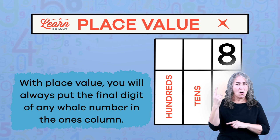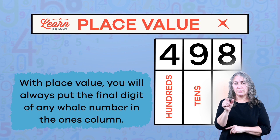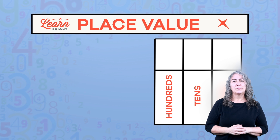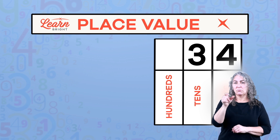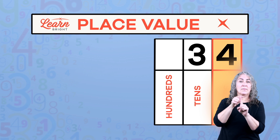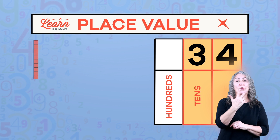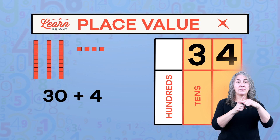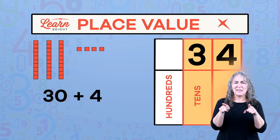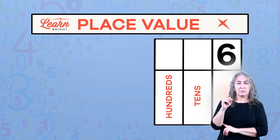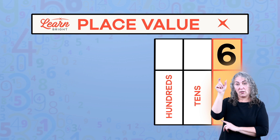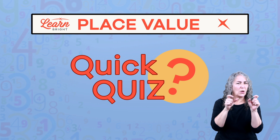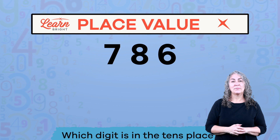With place value, you will always put the final digit of any whole number in the ones column, then all the other numbers will automatically fall into their correct columns. If the number only has two digits, we again start with the ones column. The three in the tens column represents three tens, or thirty, and the four in the ones column represents four ones, or four. If the number is only one digit, like six, the six gets inserted into the ones column, which means this digit represents six ones.